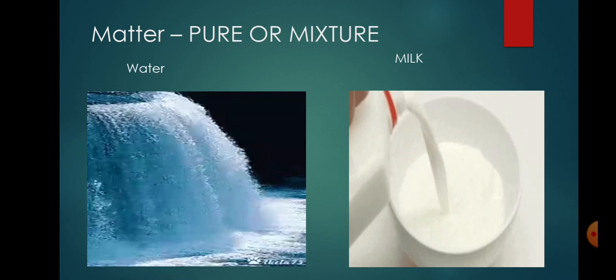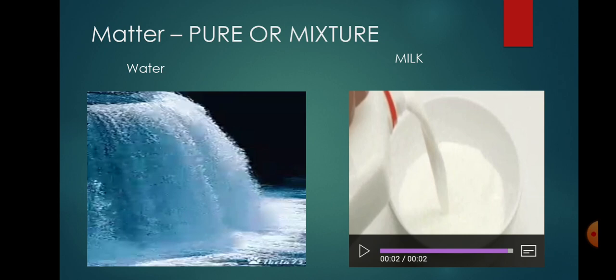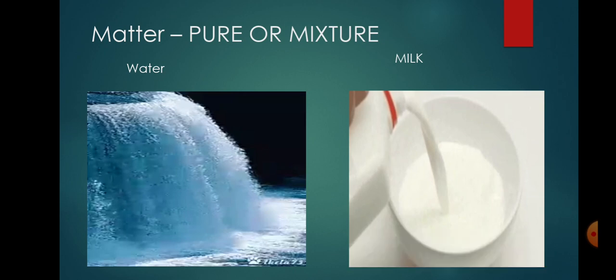In milk, there are water particles, fat particles, and protein particles all mixed together. This means there are different types of particles present. In water, there were only H2O particles. But in milk, there are water particles, fat particles, protein particles, and other particles all present together.